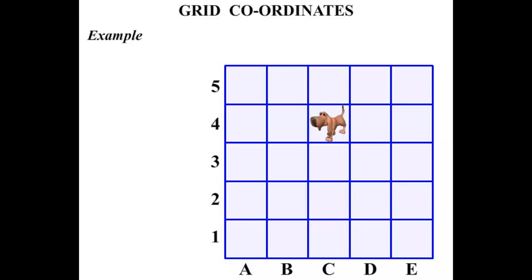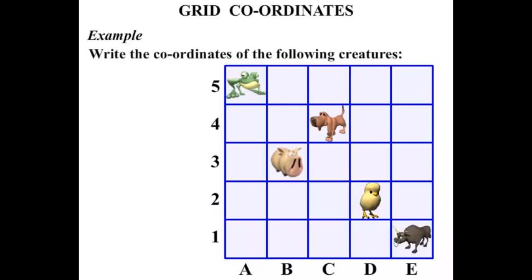We have a dog there, and a frog, a pig, a bull, and a chick. And we're asked to write the coordinates of the following creatures.